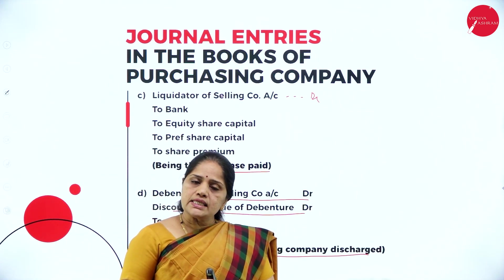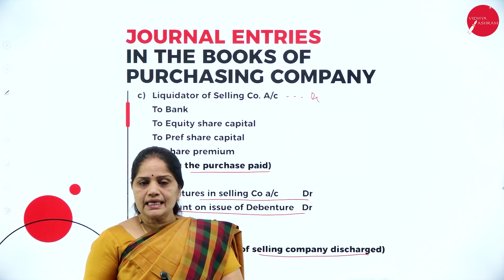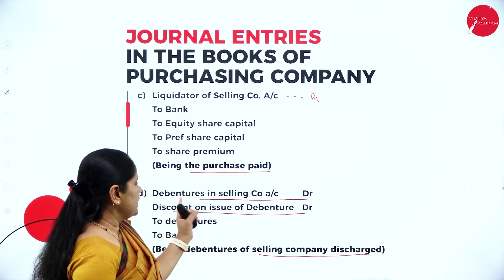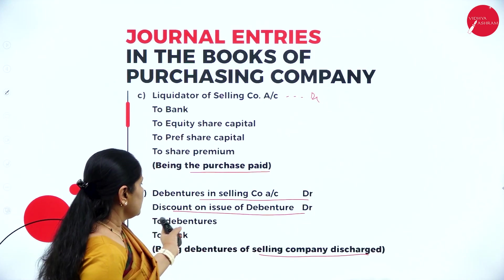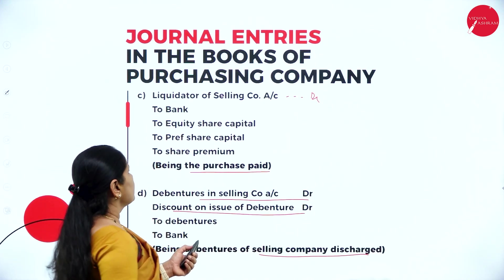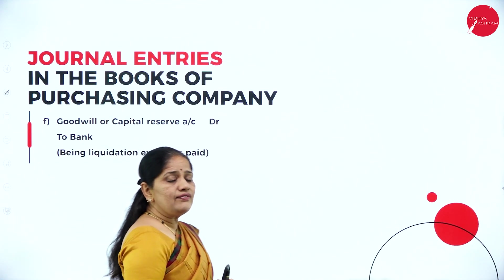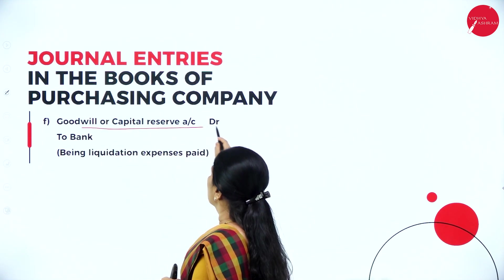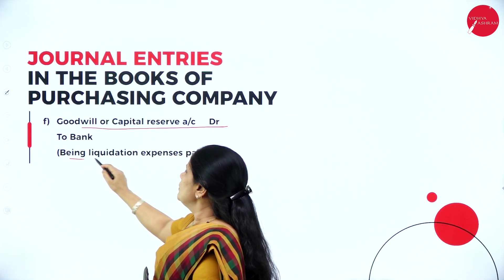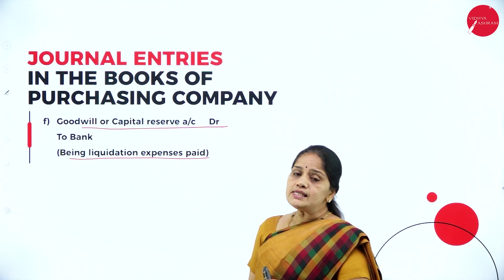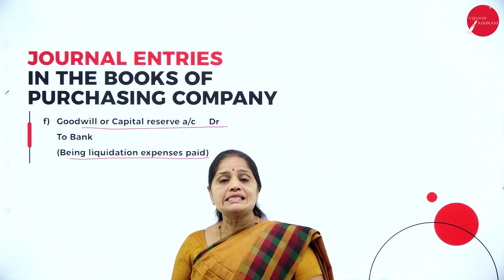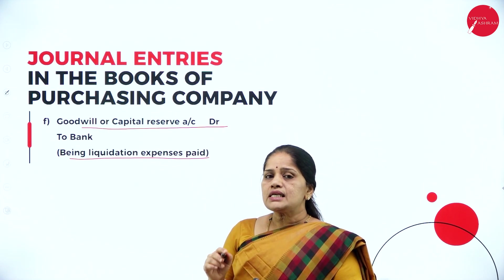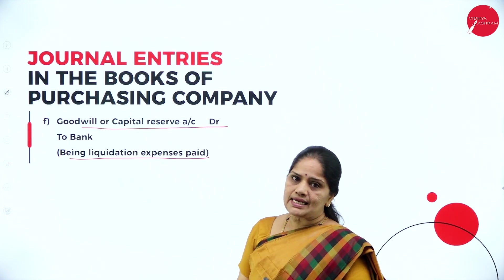If the purchasing company has taken over certain debentures from the selling company, those debentures have to be discharged. The entry will be: debentures in selling company debited, discount on issue of debentures debited, to debentures account, to bank account. The last entry is for realization expenses — if paid by the purchasing company, goodwill or capital reserve account debited to bank account. If paid by the selling company itself, realization account debited to bank account, as it is an expense to be debited to the realization account.